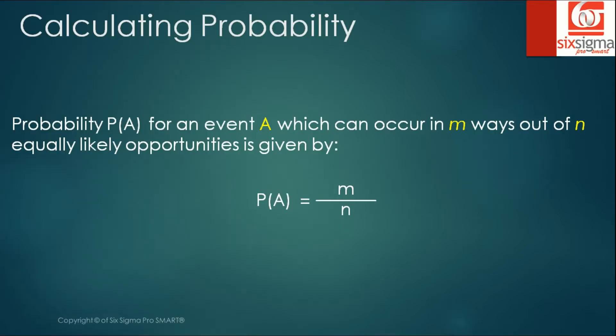What is probability and how do we calculate it? Probability P(A) of an event A, which can occur in m ways out of n equally likely opportunities, is given by m over n. So we have m chances of success and n total equally likely opportunities that exist.